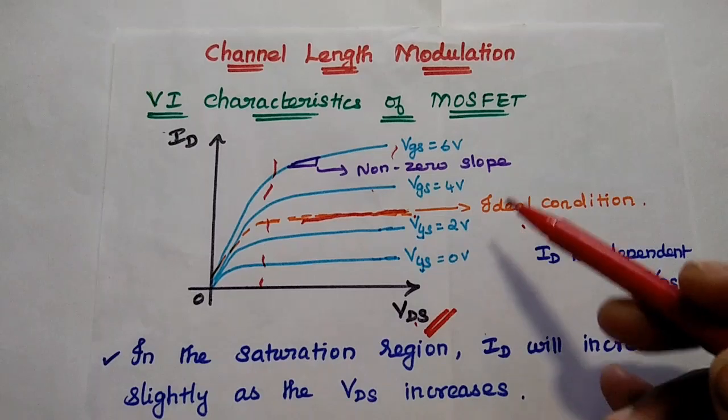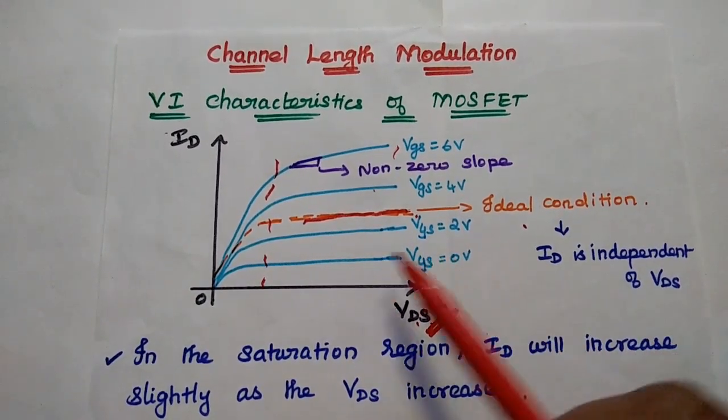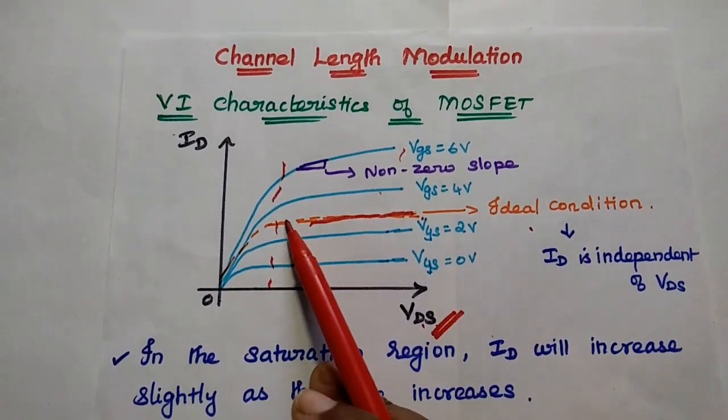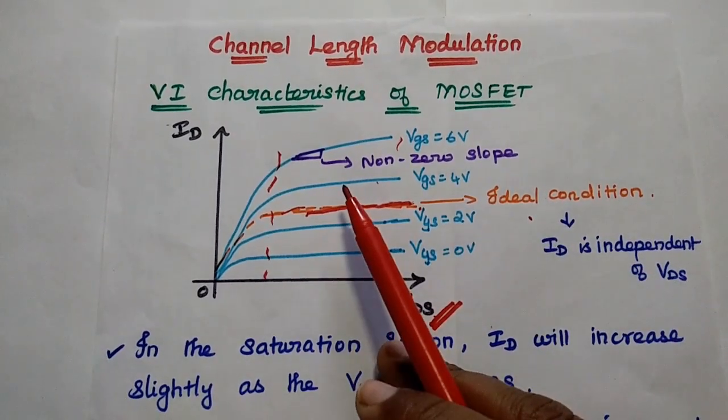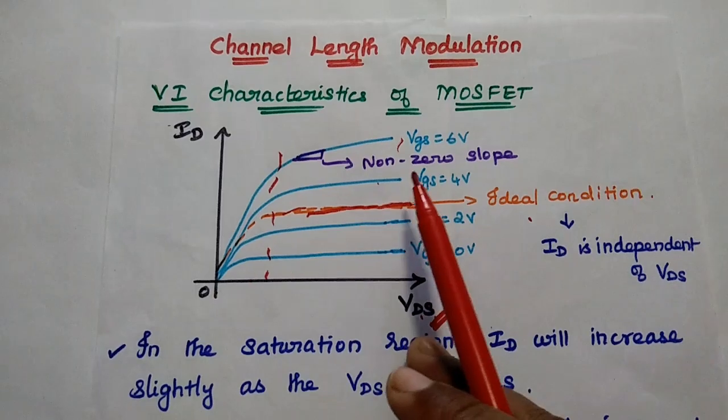We are going to increase the constant level in the ideal condition. In the practical scenario, we do have some slope. That is called a non-zero slope.